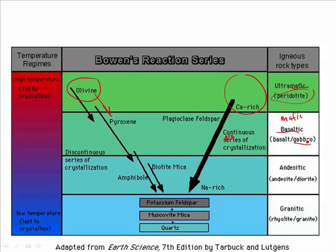Let's say there's plenty more silica in that melt. It can go further into the series and get some amphibole and biotite mica created. Meanwhile, the calcium-rich plagioclase has turned into sodium-rich plagioclase, and you now have an intermediate rock or an andesitic rock, like andesite or diorite.